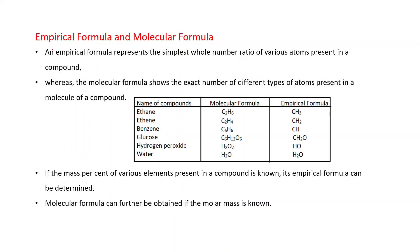Next, empirical formula and molecular formula. An empirical formula represents the simplest whole-number ratio of various atoms present in a compound, whereas the molecular formula shows the exact number of different types of atoms present in a molecule of a compound. Let's see some examples. Take the formula of ethane: C₂H₆. This is the molecular formula — two atoms of carbon and six atoms of hydrogen present in ethane.